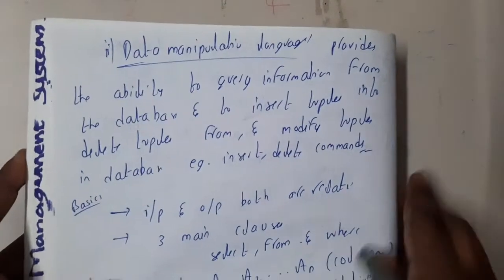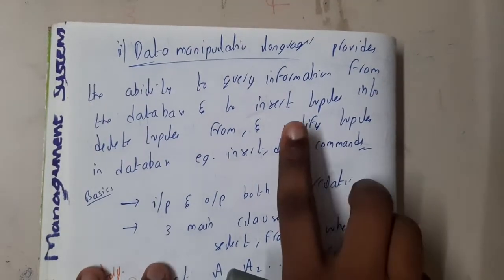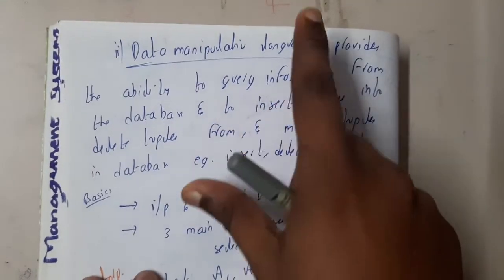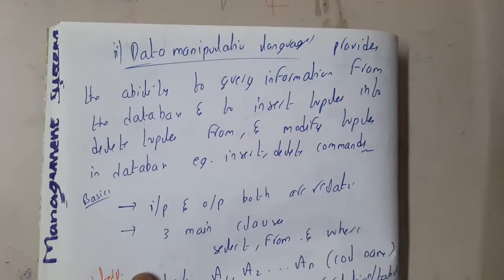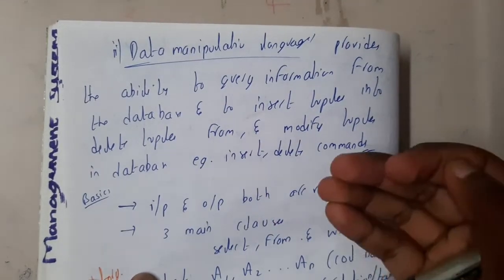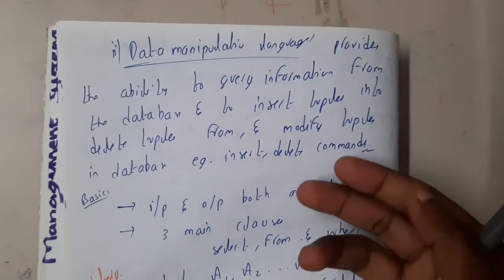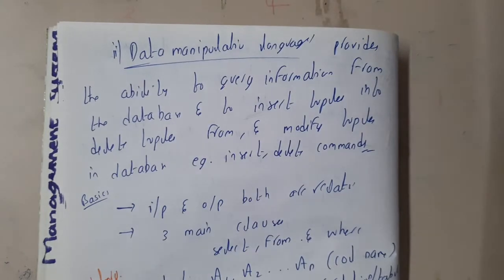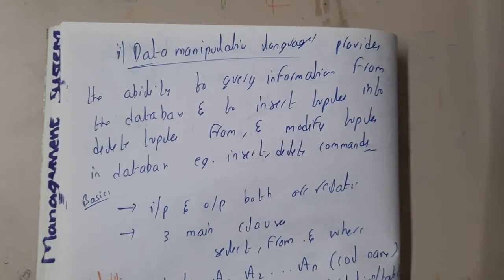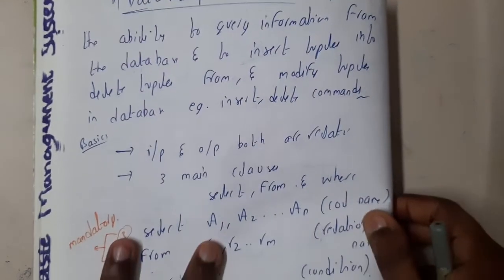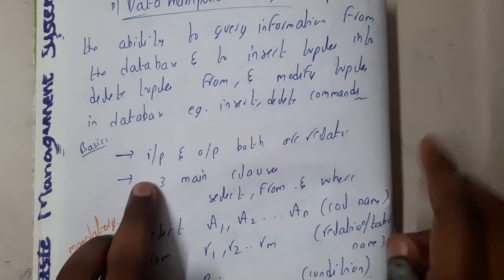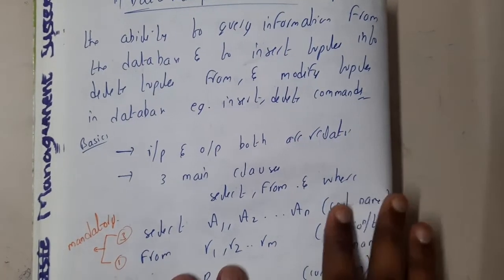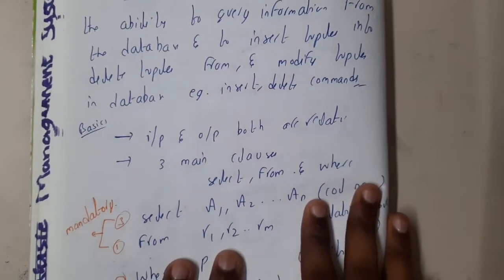The second part is data manipulation — playing with the data. You can take the data, print the data, delete the data, update it, and modify it. All these operations can be done using SQL. Both input and output operations are possible.